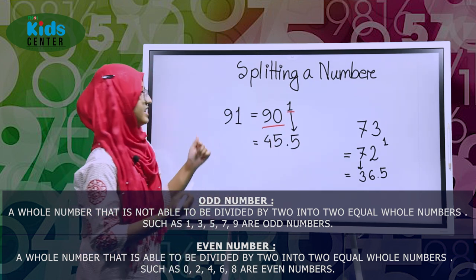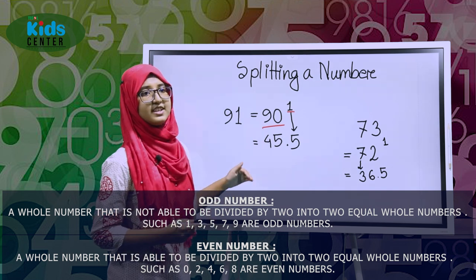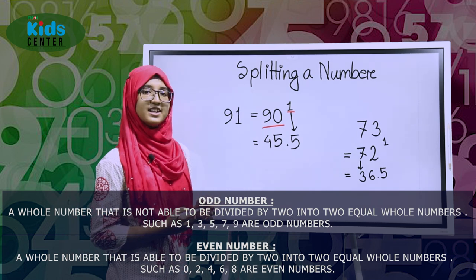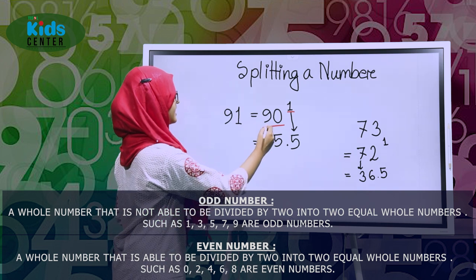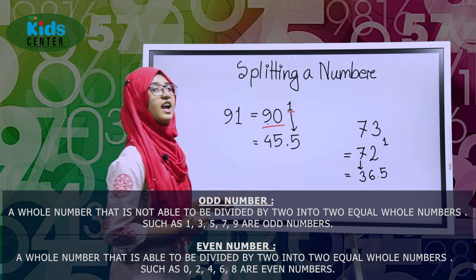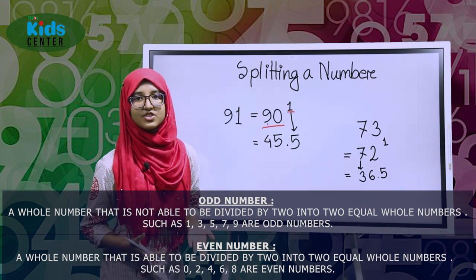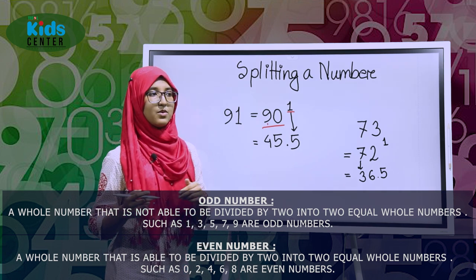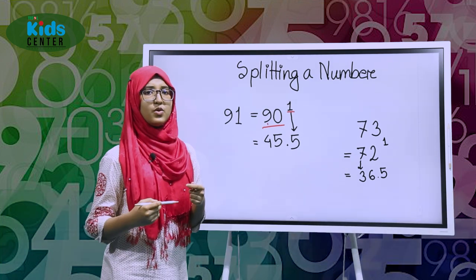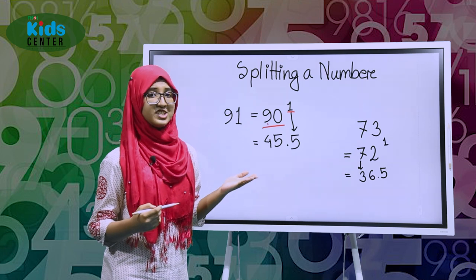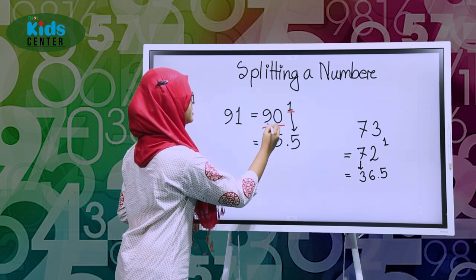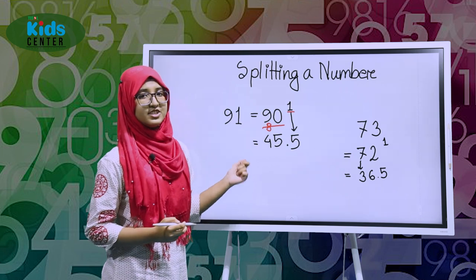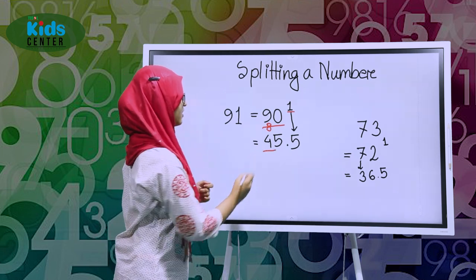Now just divide 90 into two. So how will you divide 90 into two? First take this 9 — and 9 is also an odd number, right? So to make it an even number we have to look at the lowest even number less than 9, which is 8. So just write 8, and then divide 8 by two, so we will get 4.